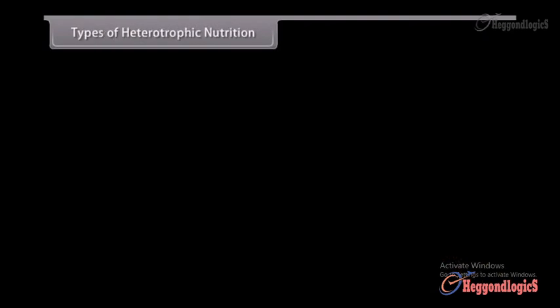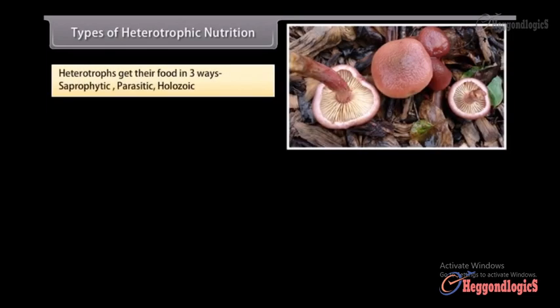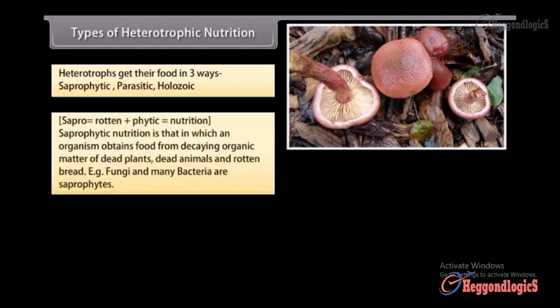Types of heterotrophic nutrition. Heterotrophs get their food in three ways: saprophytic, parasitic, and holozoic. Sapro means rotten and phytic means nutrition. Saprophytic nutrition is that in which an organism obtains food from decaying organic matter of dead plants, dead animals, and rotten bread. That is, fungi and many bacteria are saprophytes.